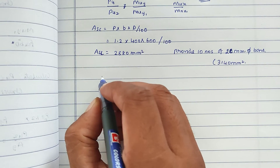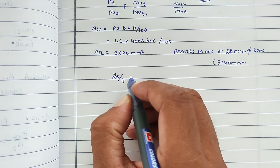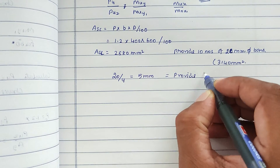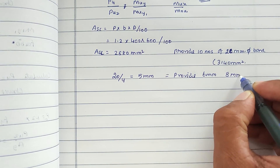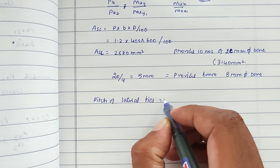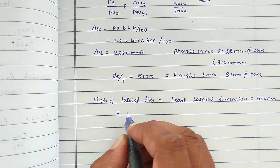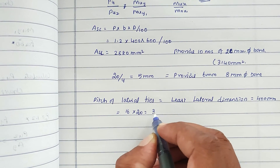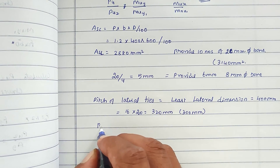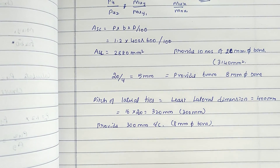For lateral ties: diameter = 20/4 = 5 mm, so provide 8 mm dia bars. Pitch of lateral ties is the least of: least lateral dimension = 400 mm, 16 × 20 = 320 mm, or 300 mm. Provide 8 mm dia lateral ties at 300 mm center to center.